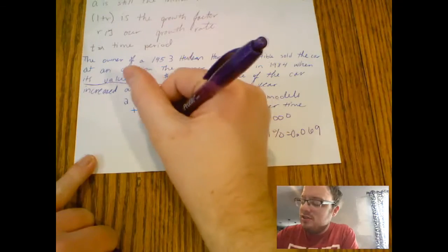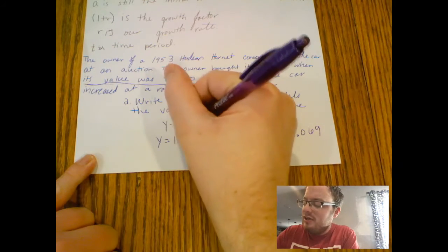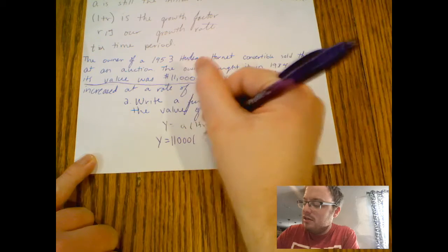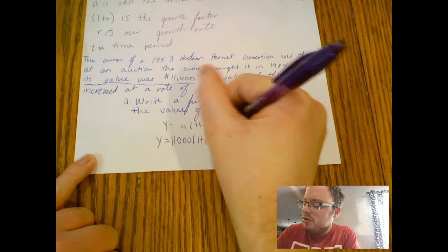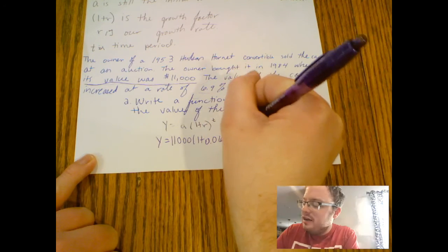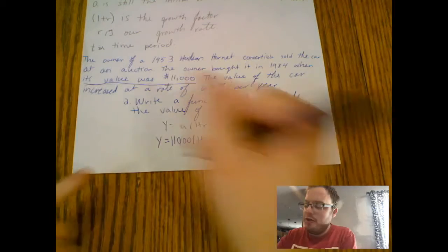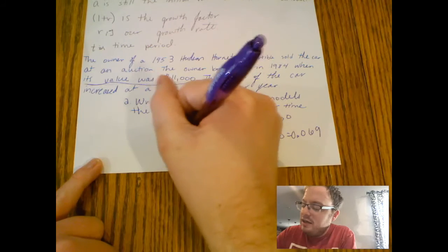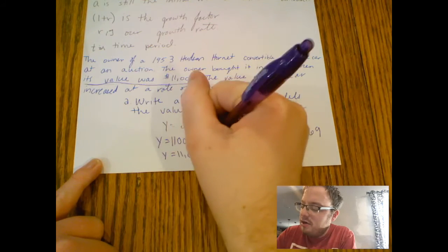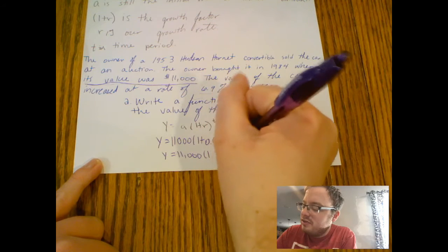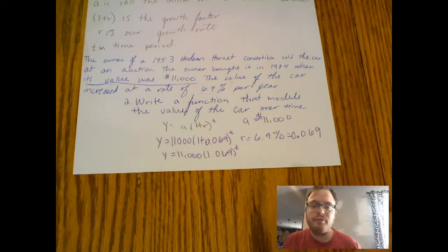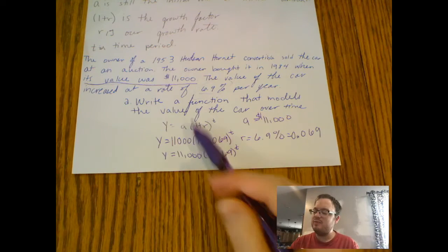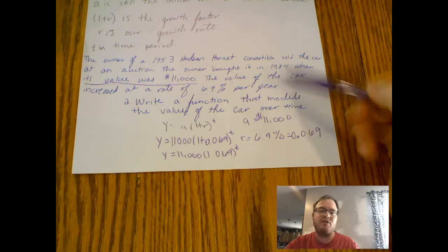If we look at this, now our equation is 11,000 times one plus 0.069 to the t. Or in other words, if I want to simplify one plus 0.069, that is 11,000 times 1.069 to the t. That is my function that models the value of the car over time. I can put any value of t in here.